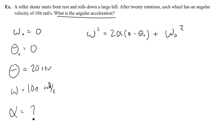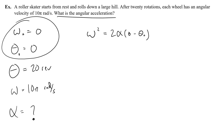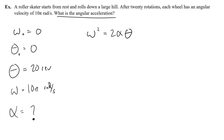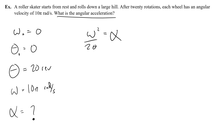Before plugging anything in, let's get rid of zeros. The initial angular velocity omega-naught is zero, so that term goes away. Since omega-naught is zero, this simplifies to omega squared equals two times alpha times theta. To solve for angular acceleration, I divide both sides by two theta. So angular acceleration alpha equals omega squared divided by two theta.